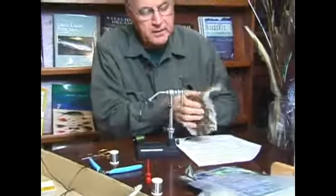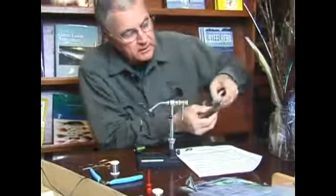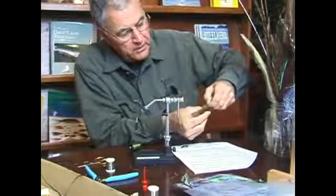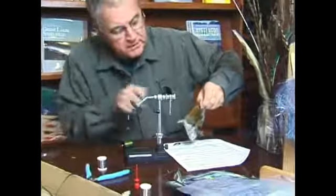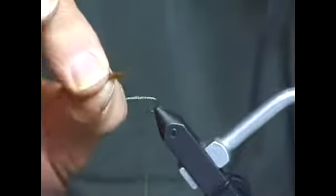Take our pine squirrel hide and we're going to fold it like this while we hold in our fingers a little tuft of material, cut it off at the skin line, we're going to tie in the tail like this.